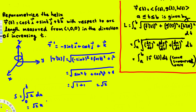You might wonder how we got zero as the lower limit. From the given information, the length is measured from the point (1, 0, 0) in the direction of increasing t. Comparing with the original function r(t) = cos(t)i + sin(t)j + tk, the point (1, 0, 0) corresponds to t = 0. That's how we get the lower limit of integration.